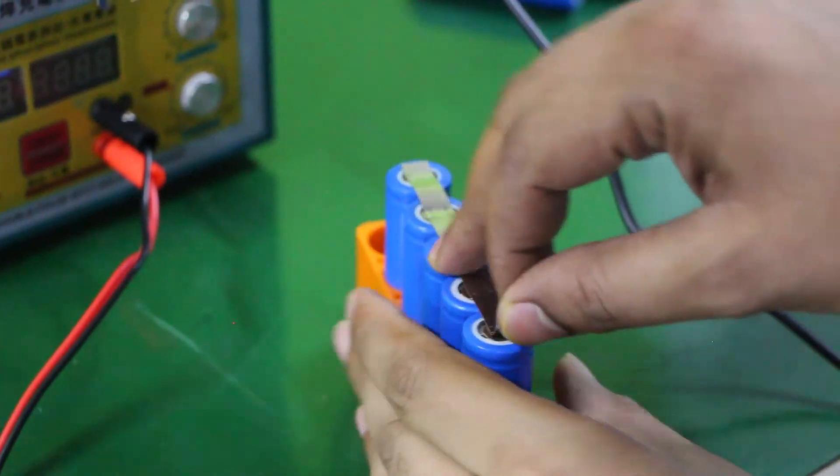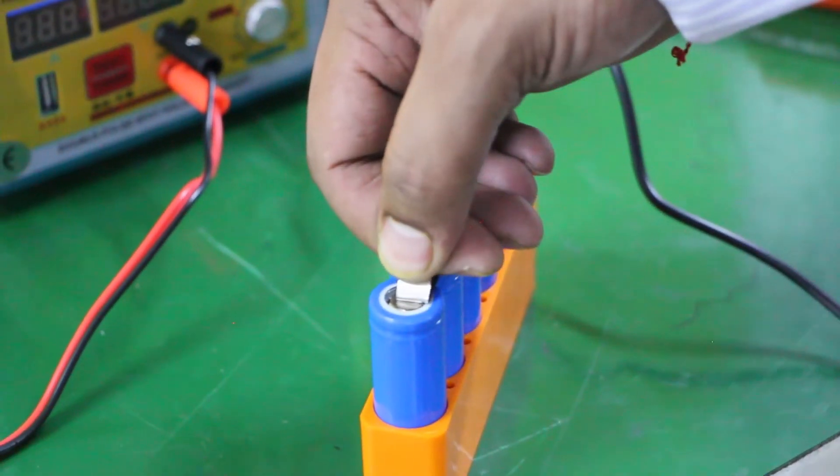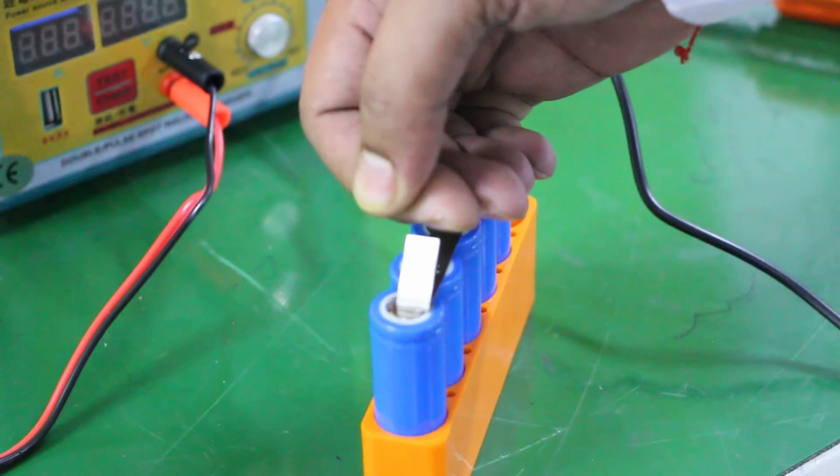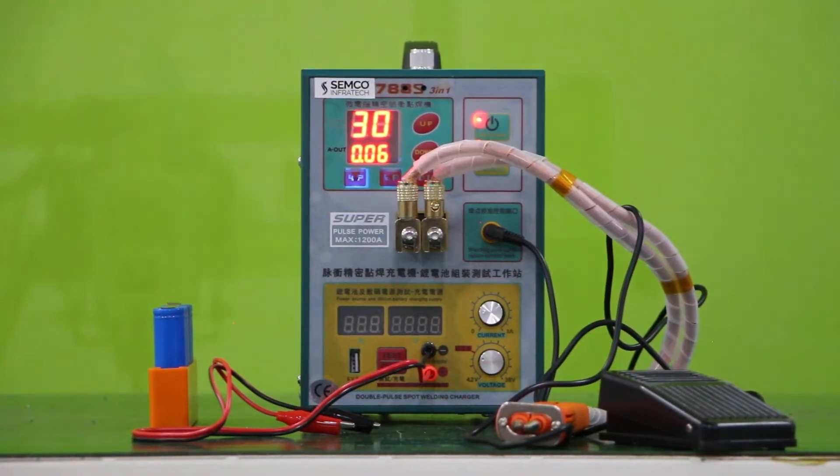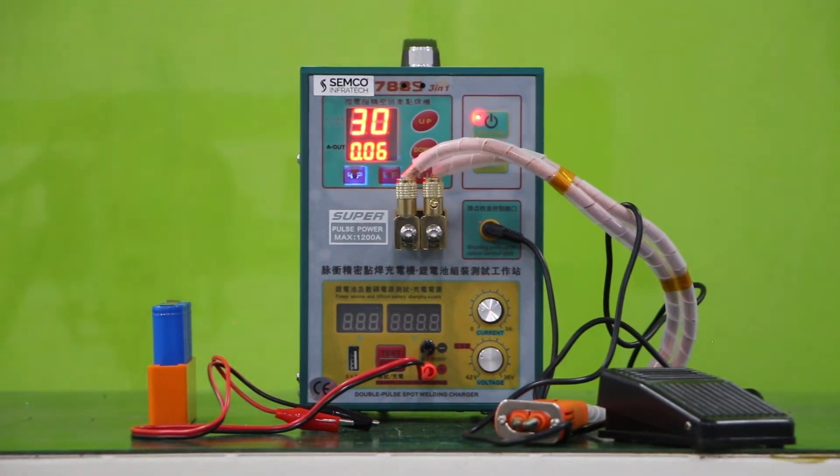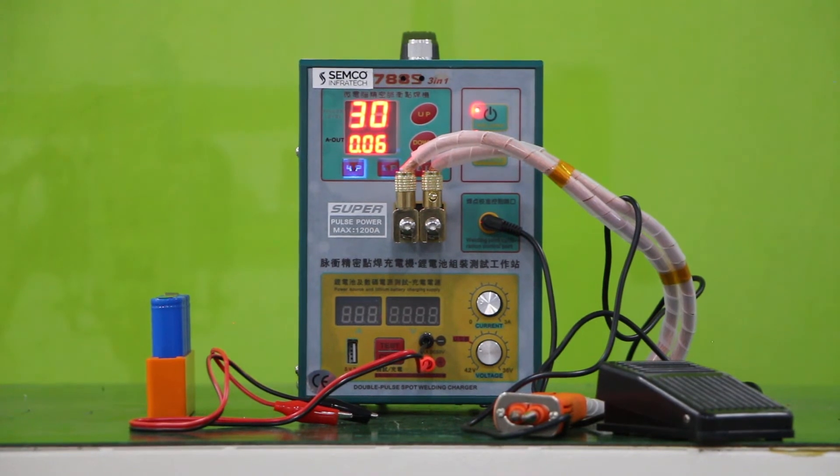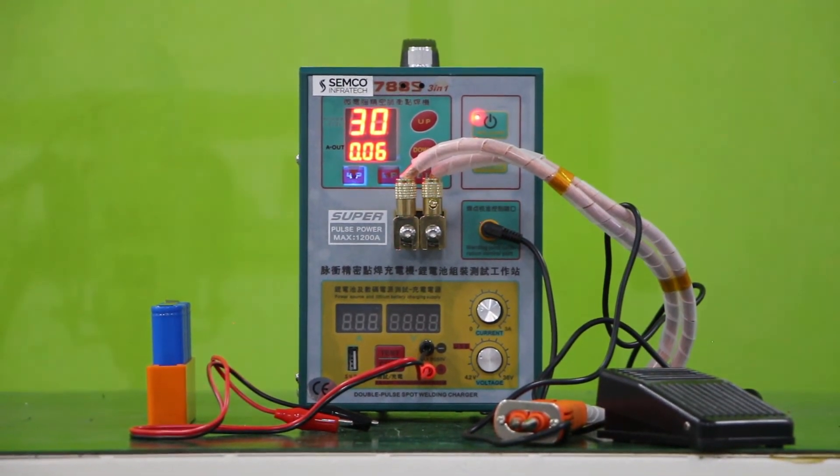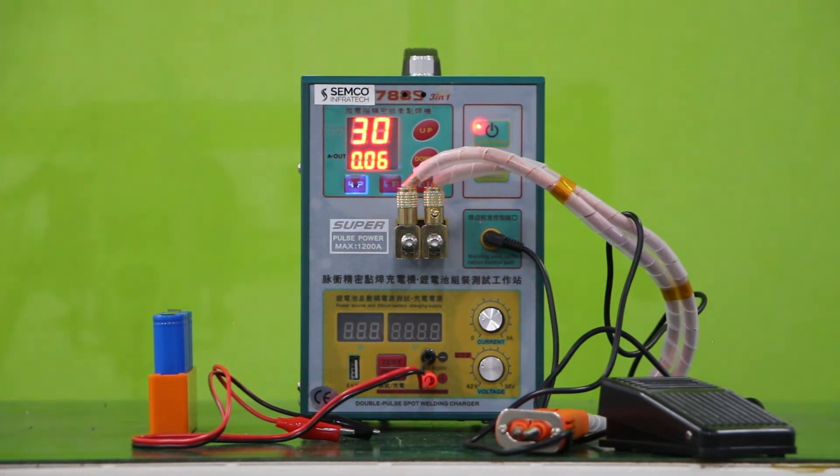Now we can see how good the welding is. So this was all about this hand welding machine, the 788S Pro. You can visit our head office to get a live demo of this machine as well as other various machines at Semko Infratec Private Limited. Thank you everyone for watching this video.